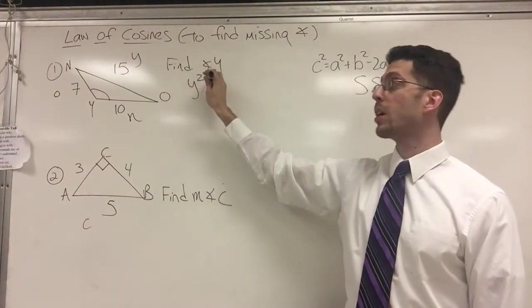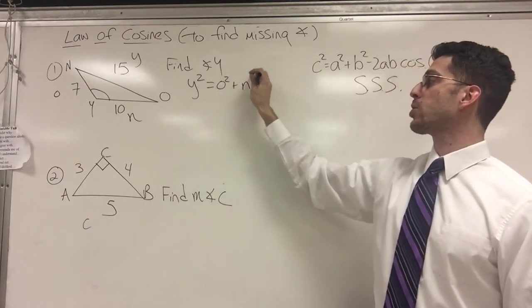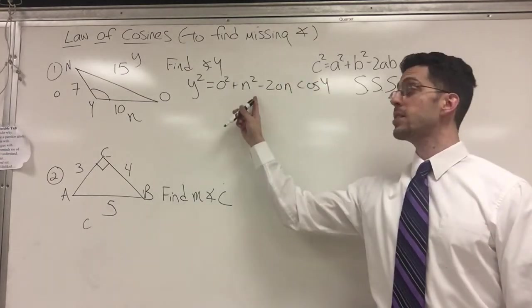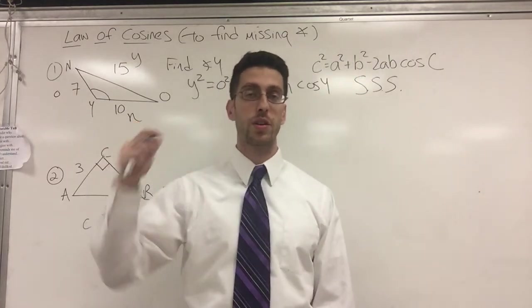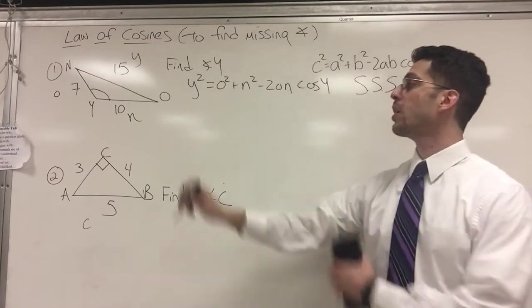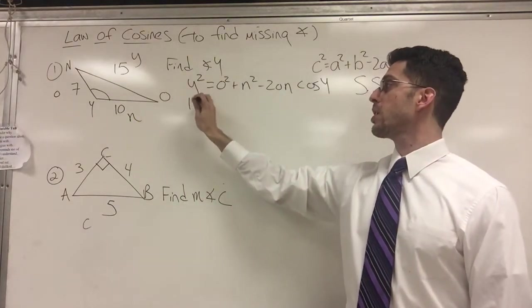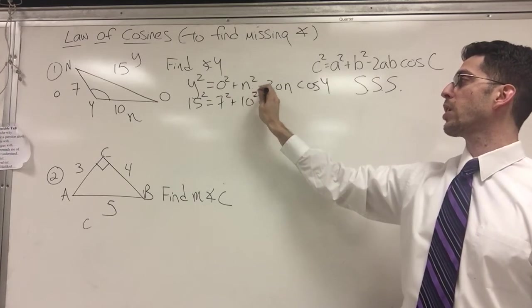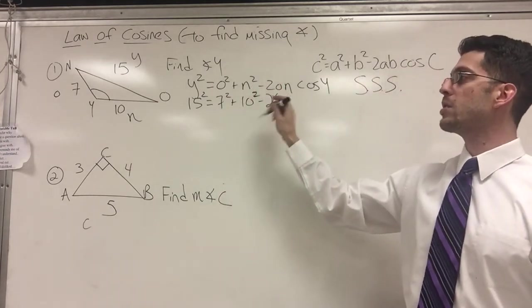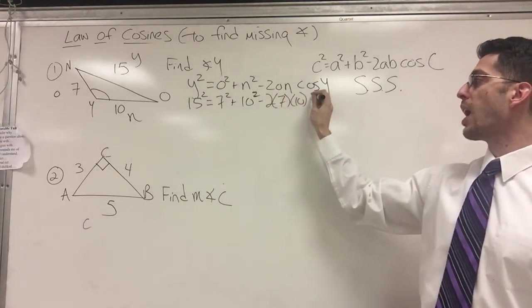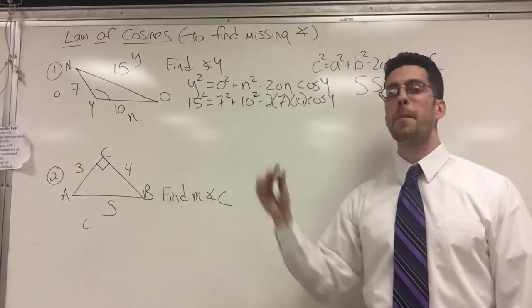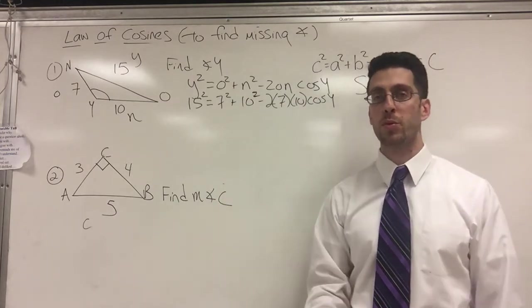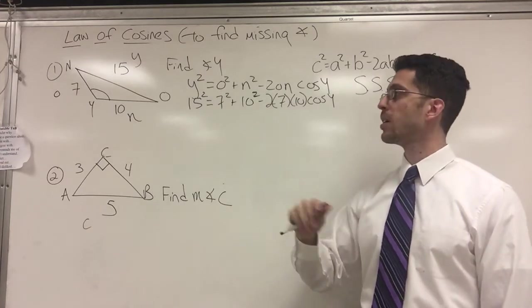Lowercase y squared equals o squared plus n squared minus two o n cosine big Y. This is that same formula, except applied to this picture. Now, let's see, I know numbers. So 15 squared equals 7 squared plus 10 squared minus two times seven times 10 times cosine Y. It's a lot. It's a lot, but it's not hard. You know how to substitute numbers.